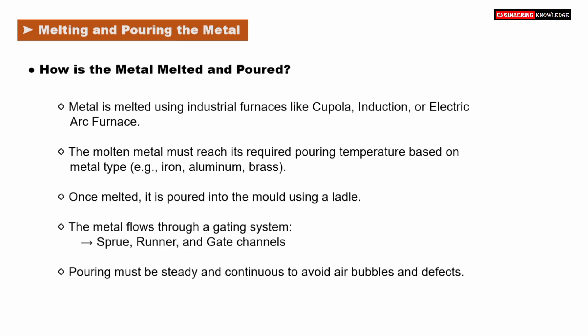Metal is melted using industrial furnaces like cupola, induction, or electric arc furnace. The molten metal must reach its required pouring temperature, which depends on the type of metal, such as iron, aluminum, or brass. Once melted, the metal is poured into the mold using a ladle.